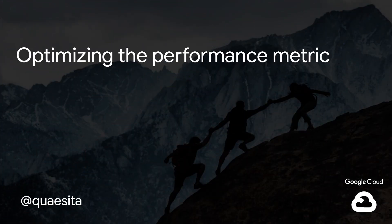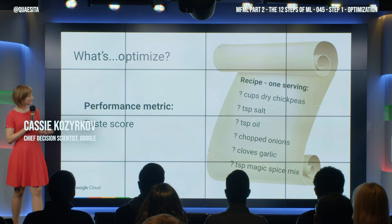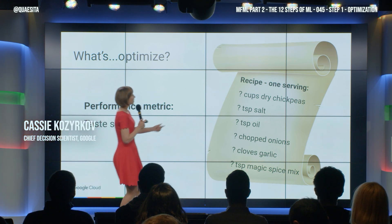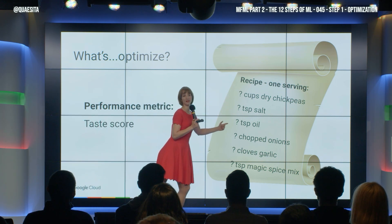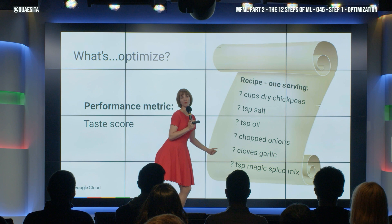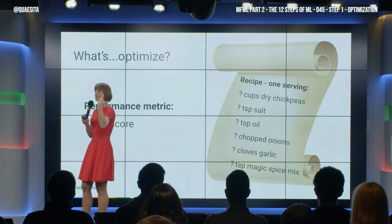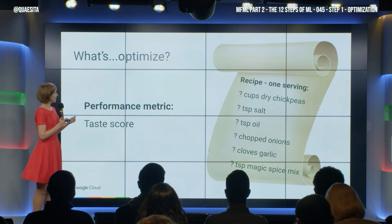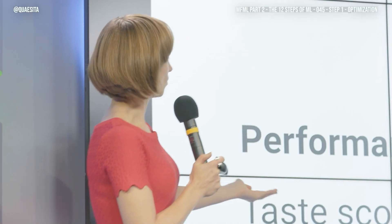What is optimization? If I talk about optimizing a function, what does that mean? Essentially, it is about picking the parameters or values to fill in into our recipe that do the best job of achieving what we're after — in this case, a taste score.